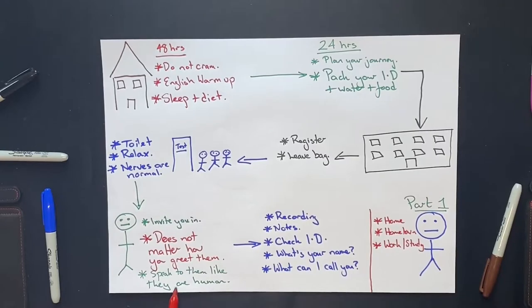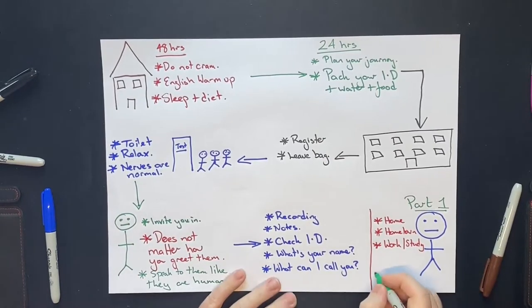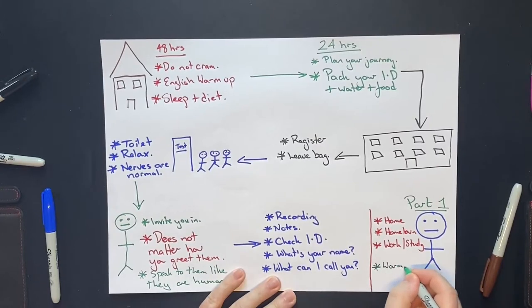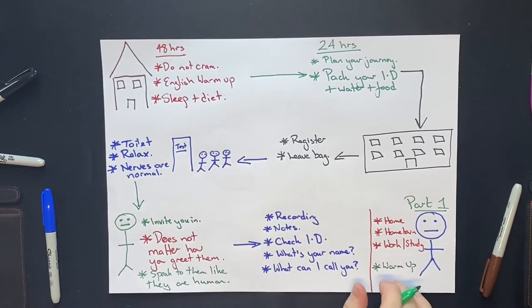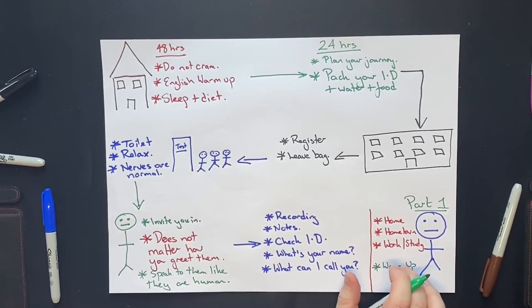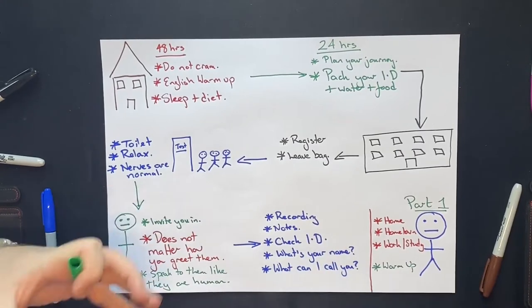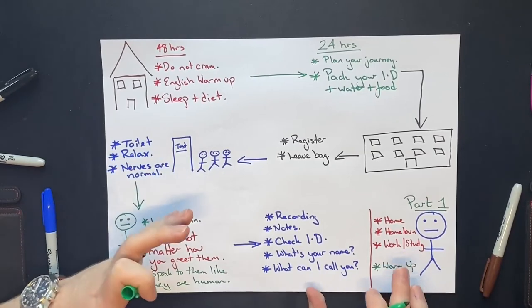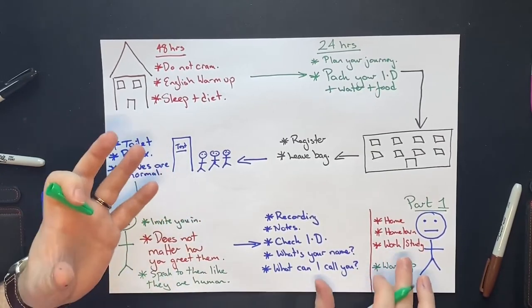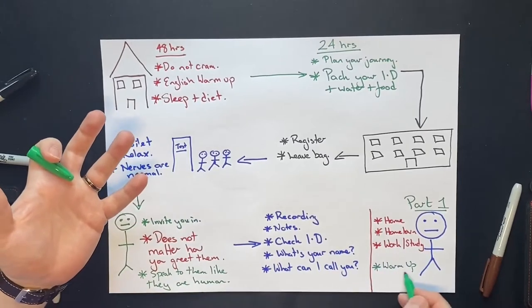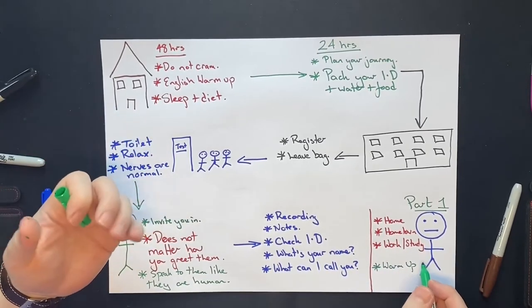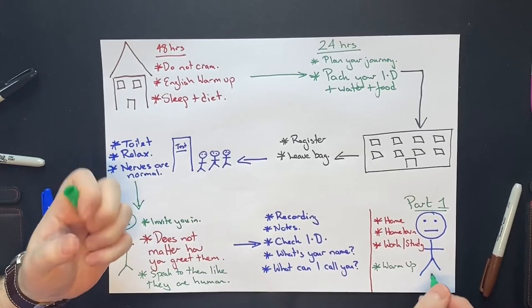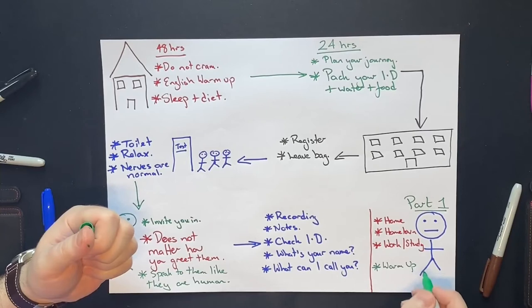So just again, speak to them like they're a human. If a human asks you, do you work or do you study or tell me about your hometown, you would just answer naturally. And it's also important to realize that the first few questions in part one are just a warm-up. They're a warm-up for you because, just like an athlete, you need to relax into the test. The examiner is considering what you're saying, but they're not judging you too harshly at the beginning of part one because they know they're just warming up. This also gives the examiner a chance to warm up and get used to your accent, your style of speaking, your pronunciation, and focus in on what's actually happening.